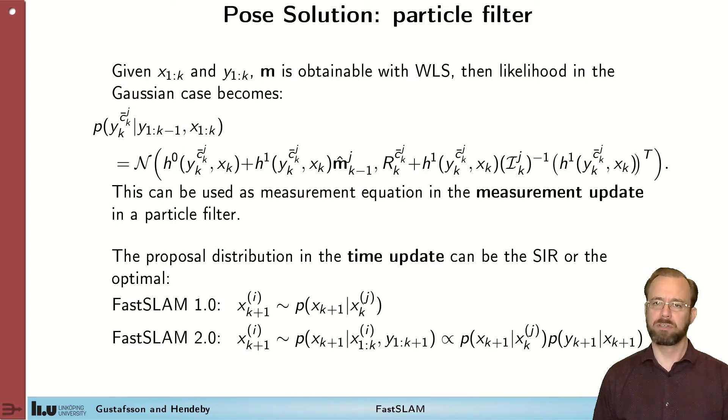The next part that is needed in the particle filter to conclude this FastSLAM algorithm is how to time update the pose. There are two different methods to do this. The first one suggested, also denoted FastSLAM 1.0, is to use the same method as in the SIR particle filter, the proposal. In an update to FastSLAM 2.0, it was instead suggested to use the optimal proposal, which includes also the measurements here.